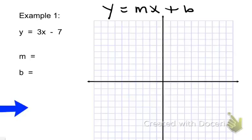Please make sure that you have all the materials you're going to need: a pencil, a straight edge or ruler, and graph paper. Please jot down example one, y equals 3x minus 7.